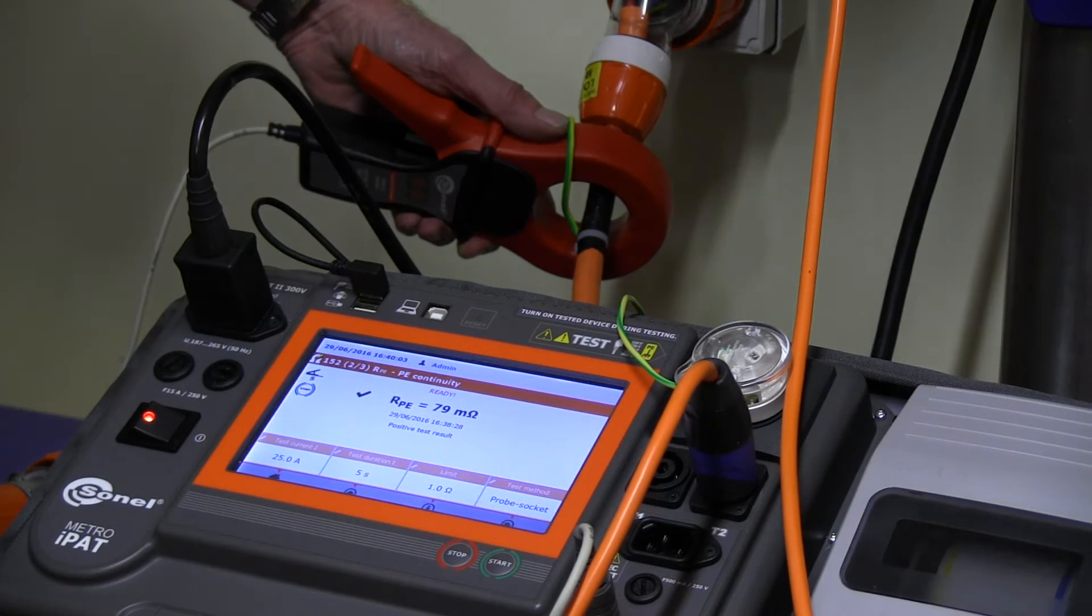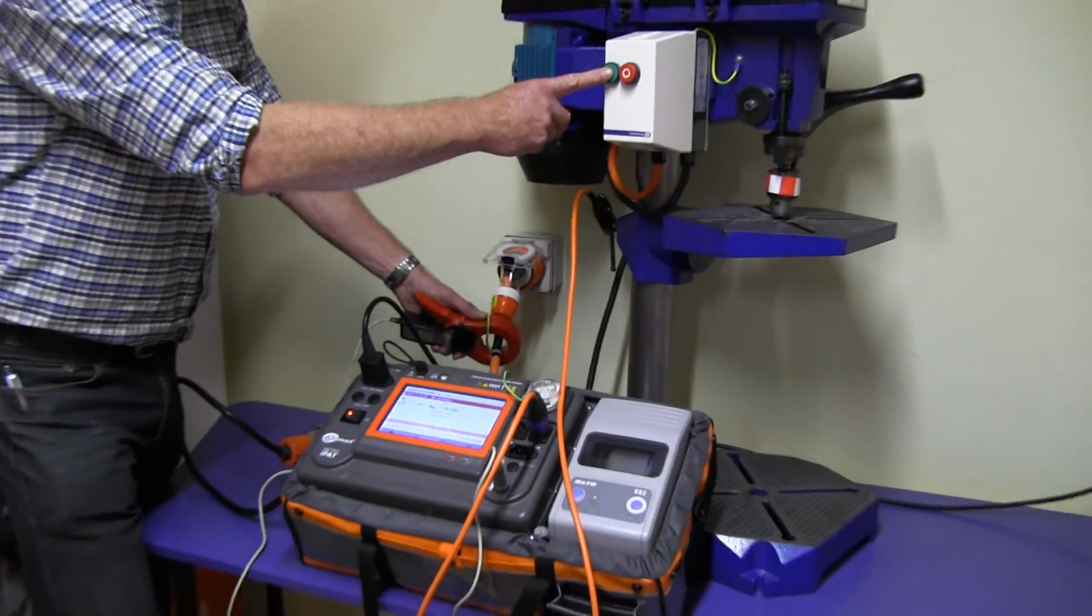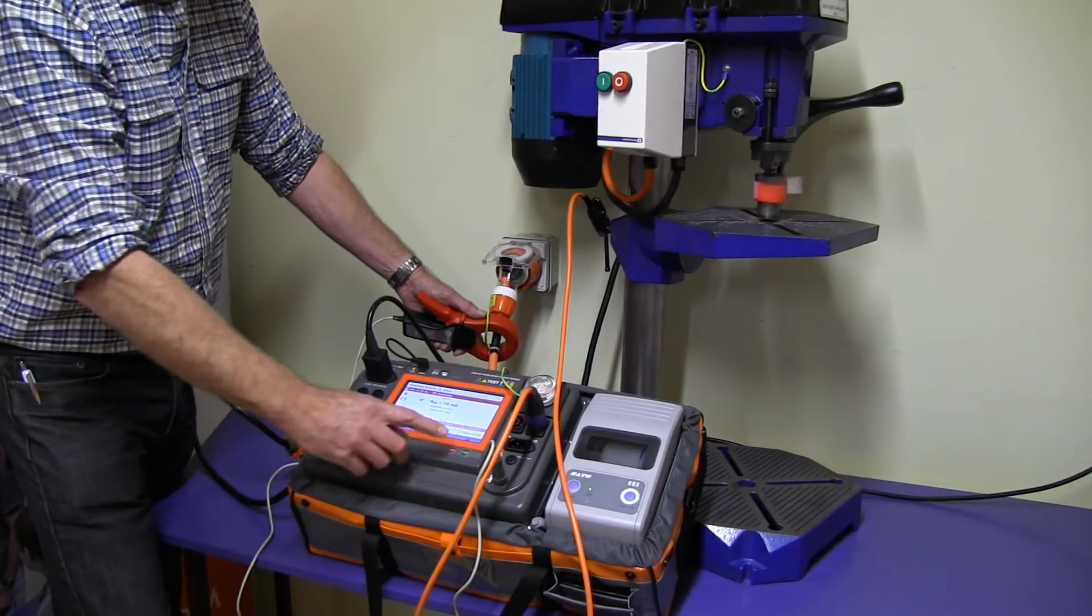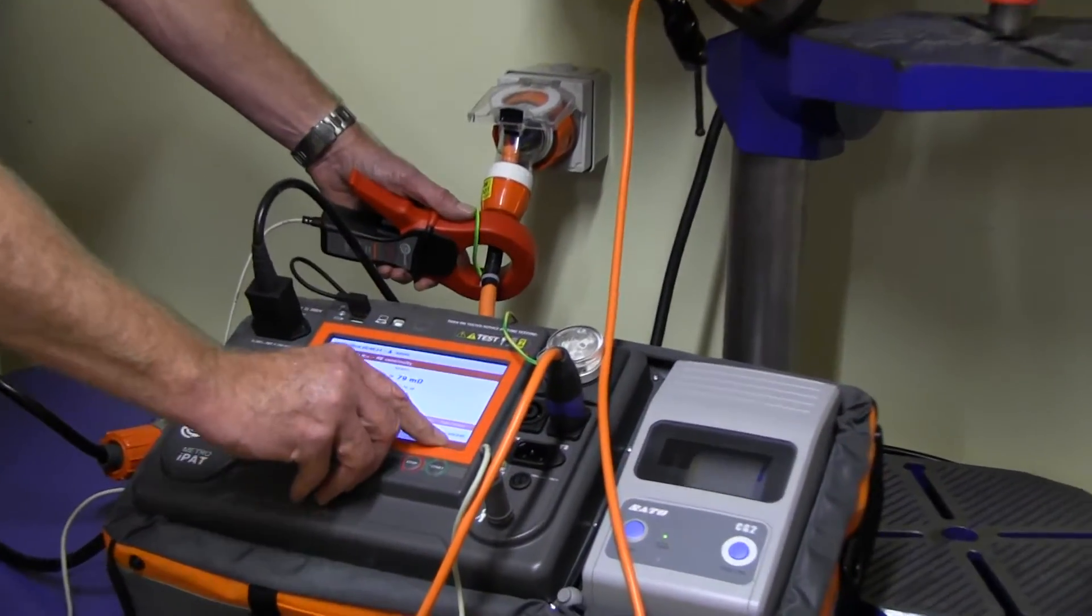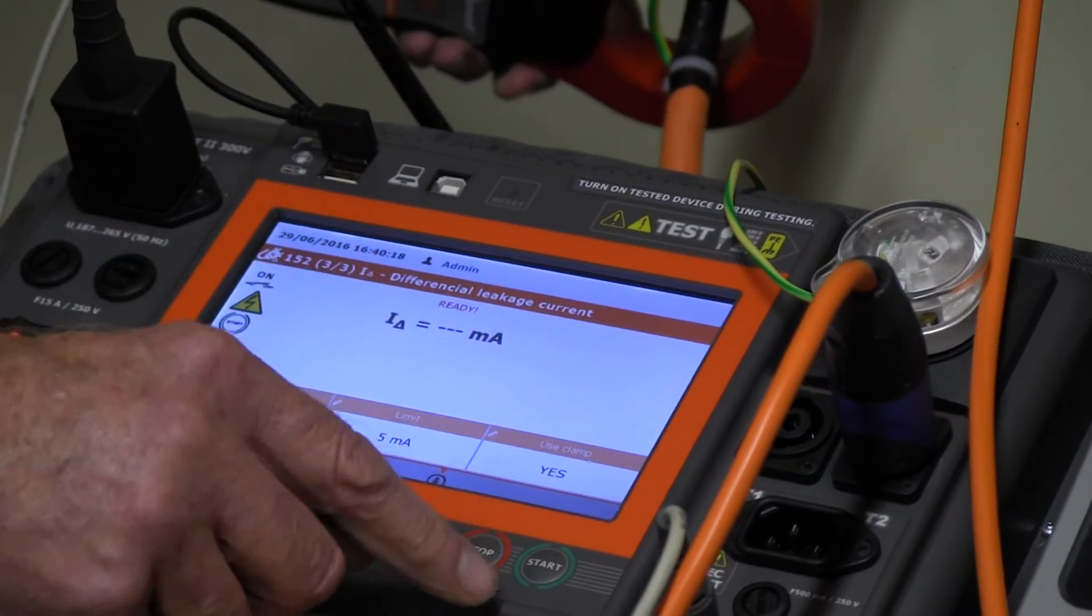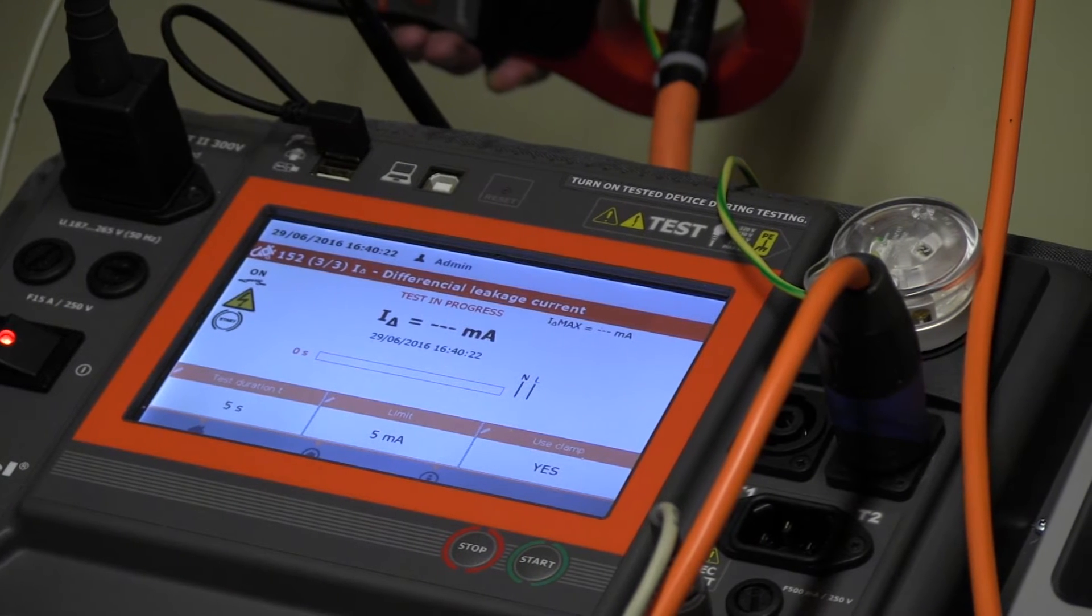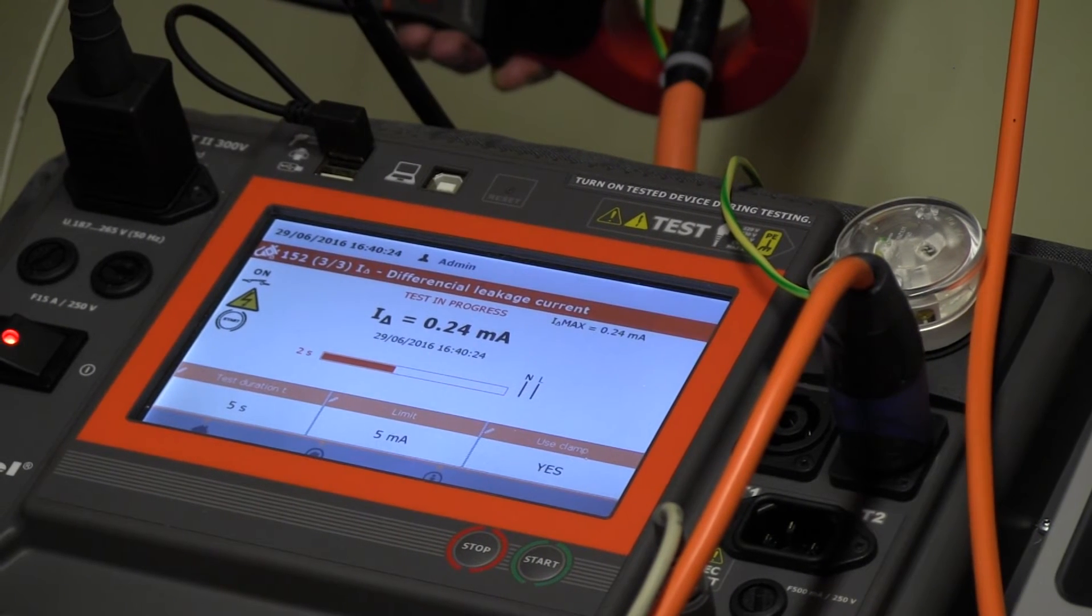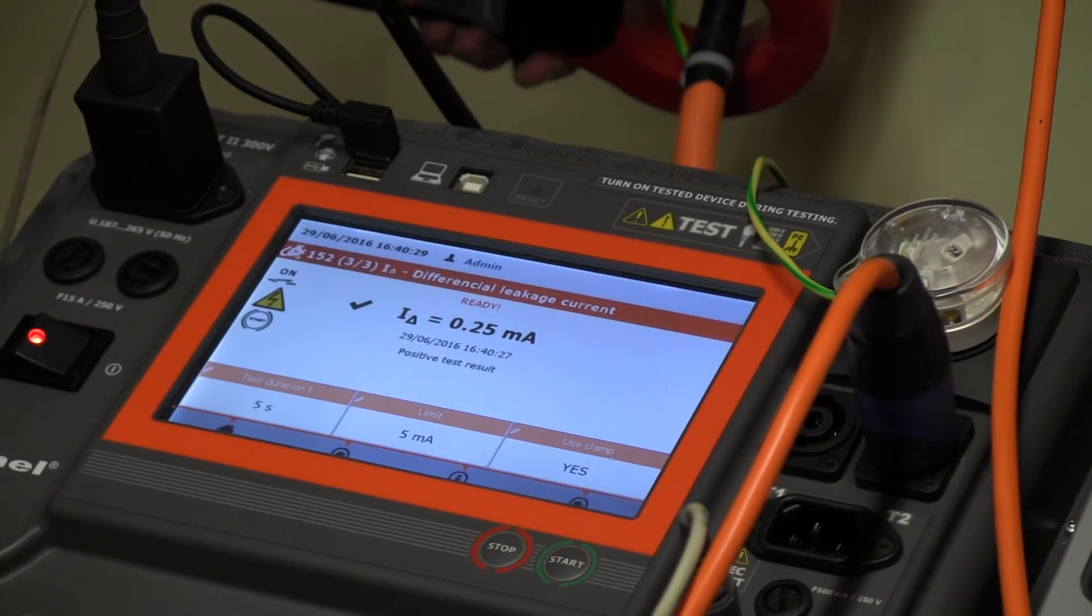At this point I start the drill press. It's running through its normal three-phase supply through the adapter lead. We press the start key with the arrow key forward. Now measuring the leakage, 0.24 of a milliamp. That's good. We can stop the machine now.